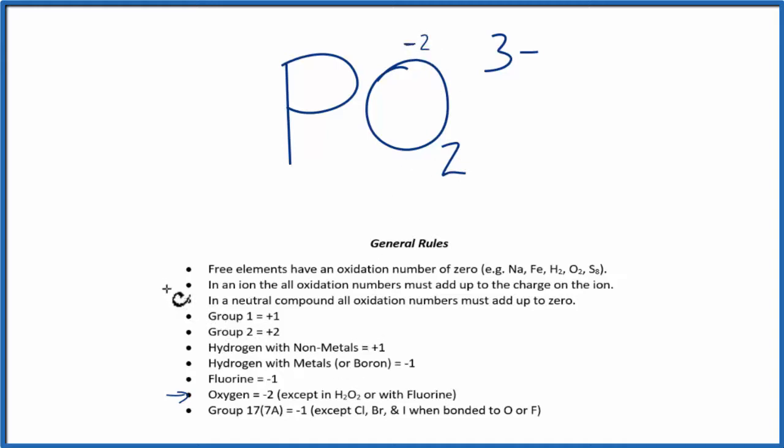We can also see that in an ion all the oxidation numbers add up to the charge on the ion. That's this three minus here, so we could say phosphorus, which we don't know, plus two times minus two, that's minus four, should equal this three minus here.